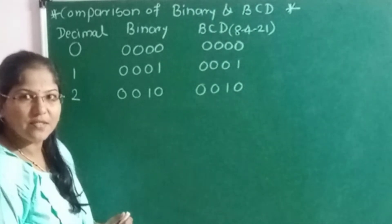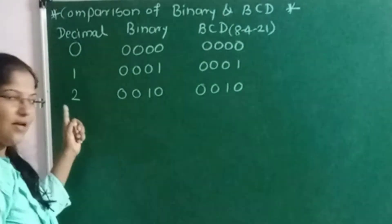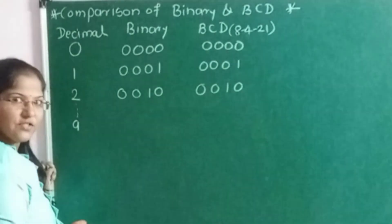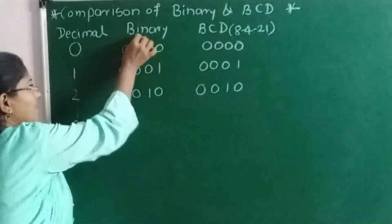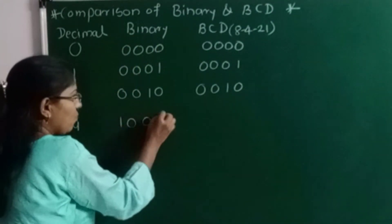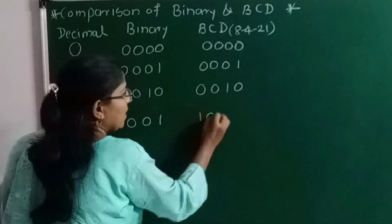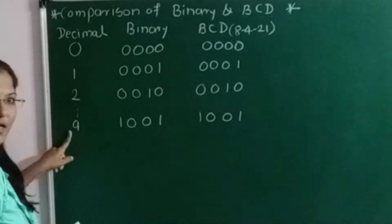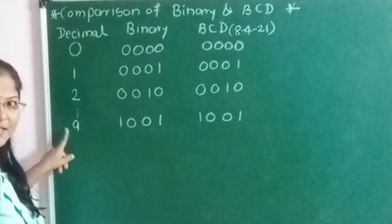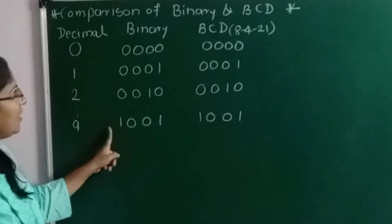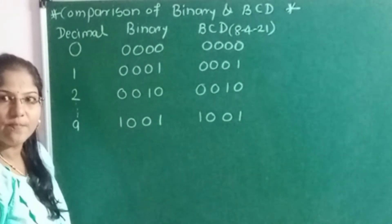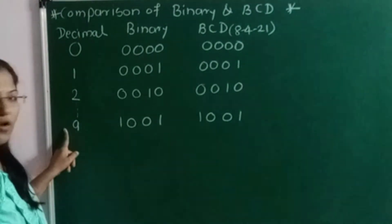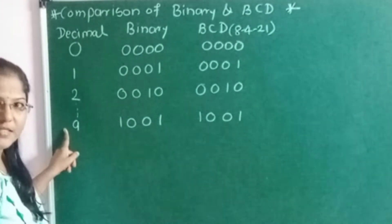Then what is the difference between binary and BCD? Let me take a few more decimal digits: 3, 4, 5, and then the last decimal digit 9. Binary for 9 is 1001 and BCD for 9 is also 1001. So from 0 to 9, if we represent decimal digits from 0 to 9, their binary equivalent and BCD equivalent are the same — there is no difference. These digits 0 to 9 are called valid BCDs.